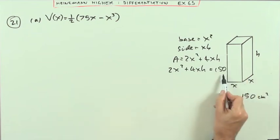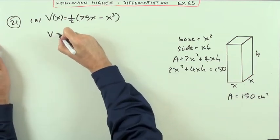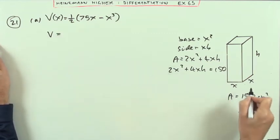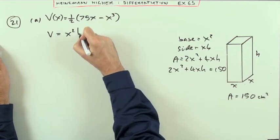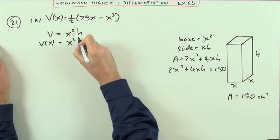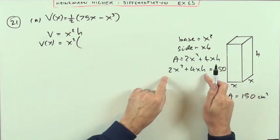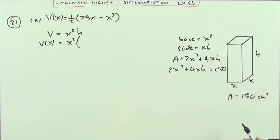Now that gives me an equation that I can rearrange to get h, because to get the volume, I know that the volume is given by length times breadth times height, x squared h. But if I want it just in terms of x, I'll need to replace this h. So here's an equation that I can use to generate h in terms of x's.